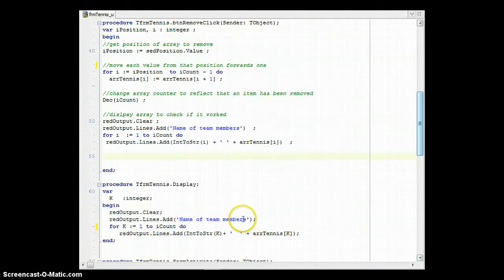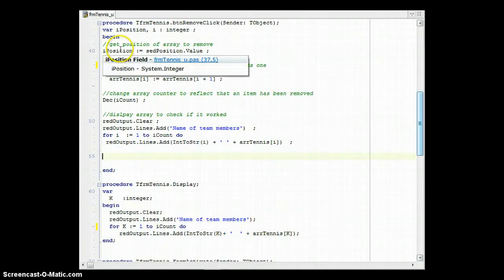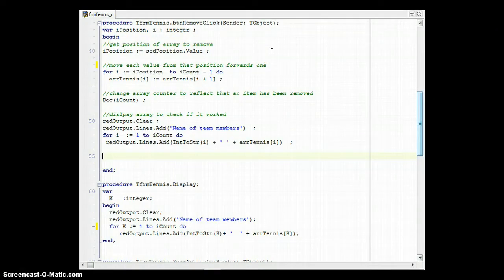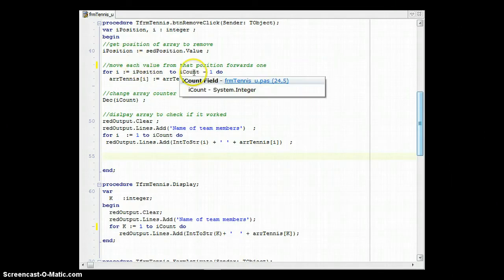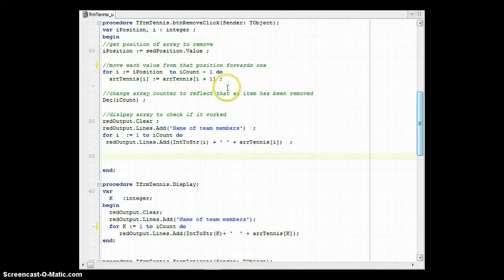So to recap, you need to get the position of the element in the array that you want to remove, either by asking the user for that position or by searching for it. Then we are going to take from that position until the second last element in the array and move everything forward, shift everything from position 4 into 3, from 5 into 4, and so on. And once we've done all of that, we then decrease the counting variable for the array. And it's literally that simple.